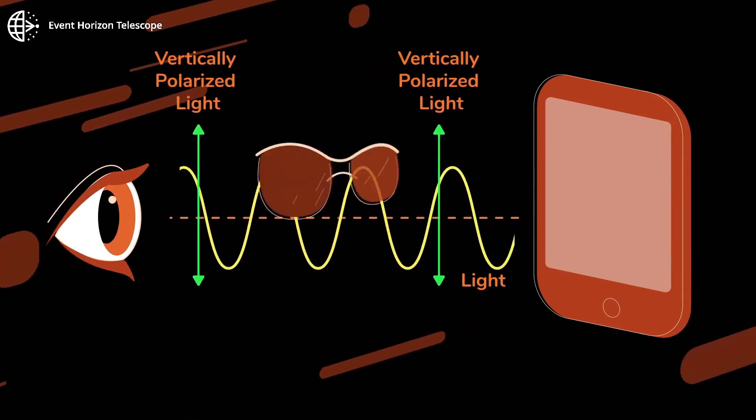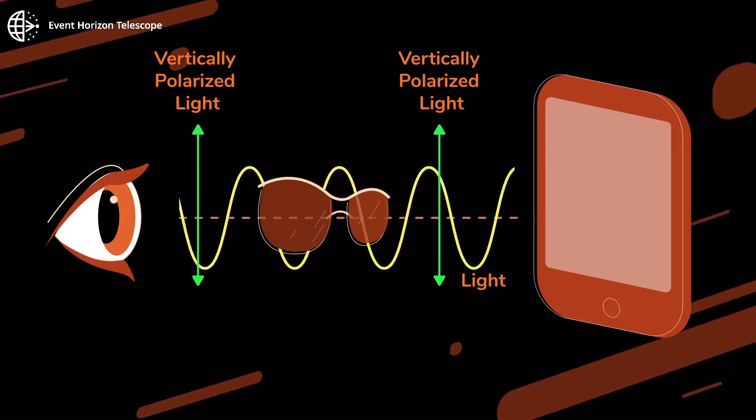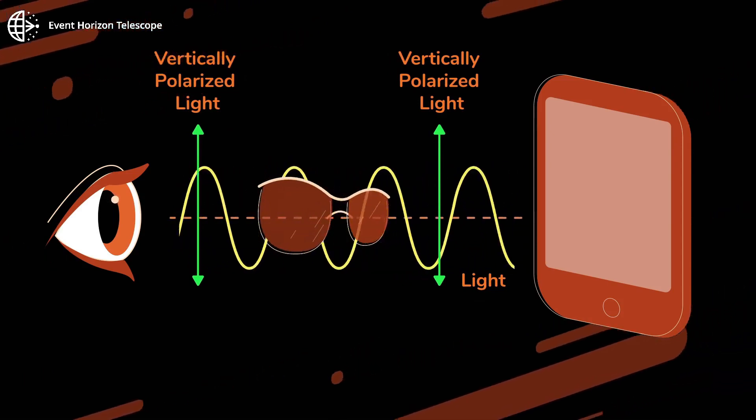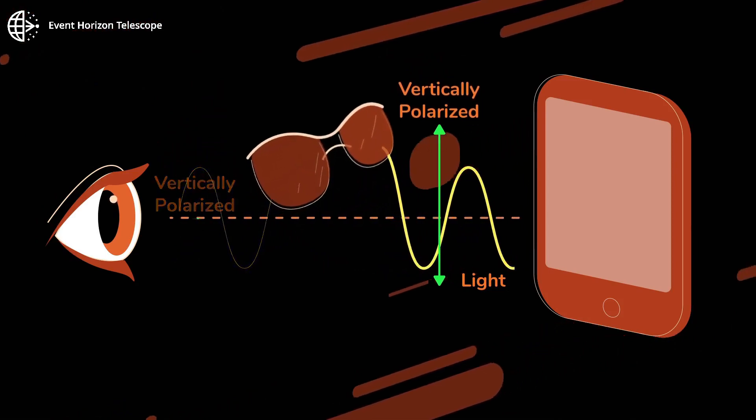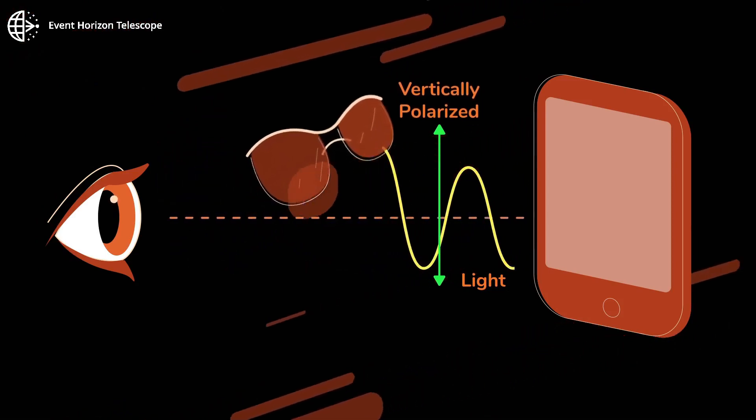Your polarized sunglasses are a polarized filter. Here, they let vertical polarization through. If we rotate them, almost all the polarized light gets blocked.